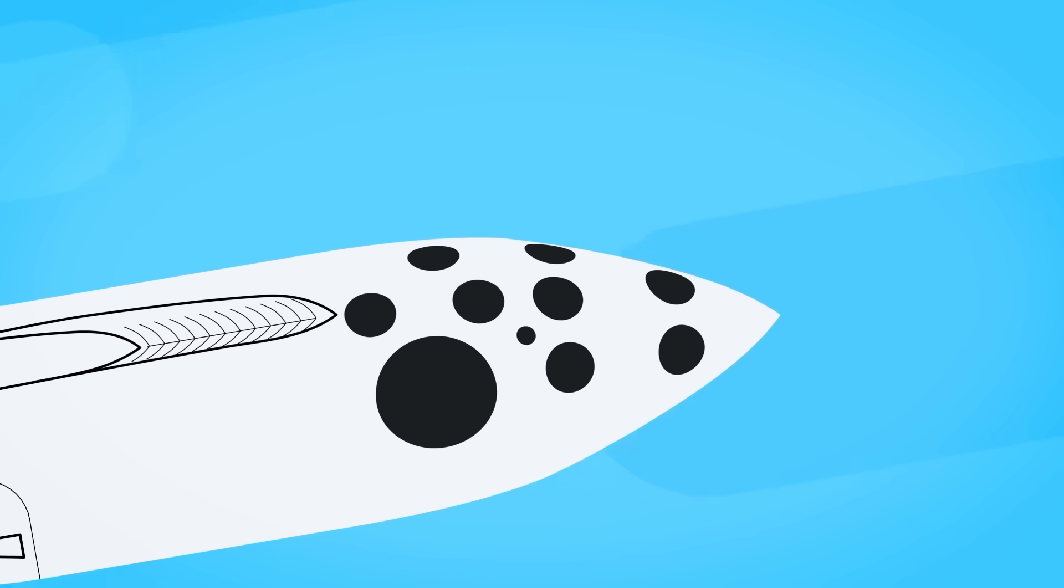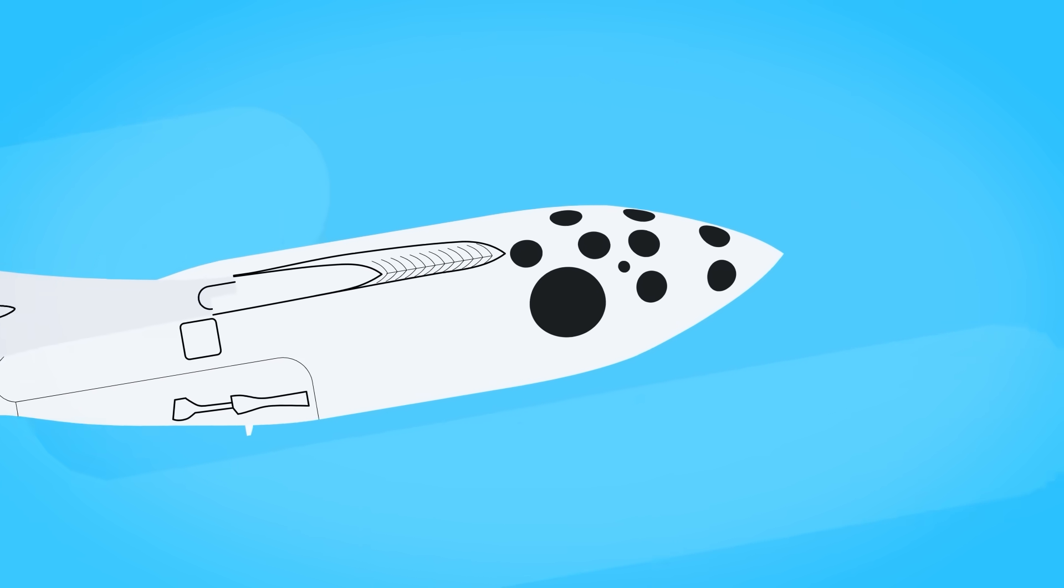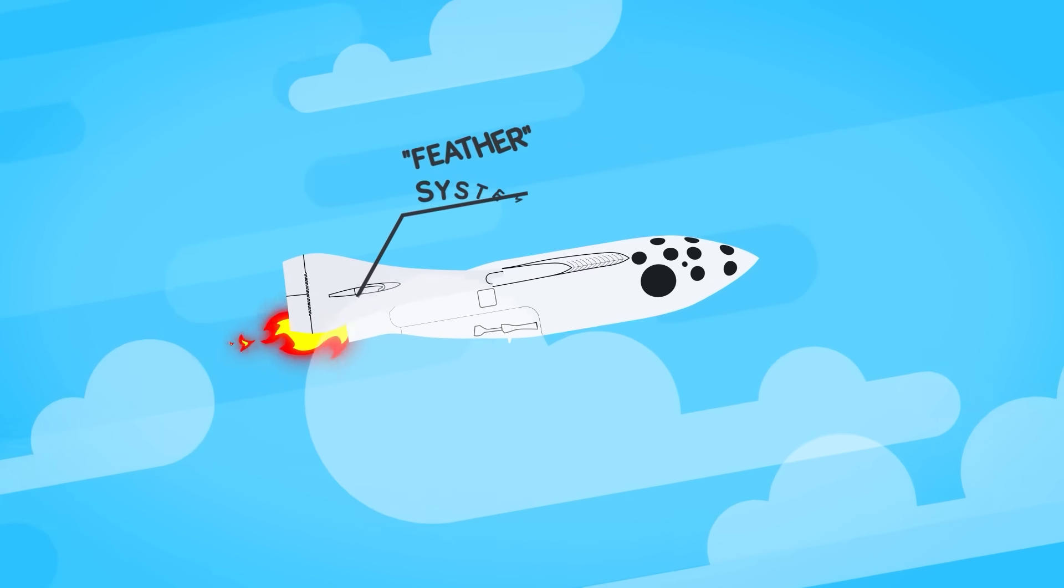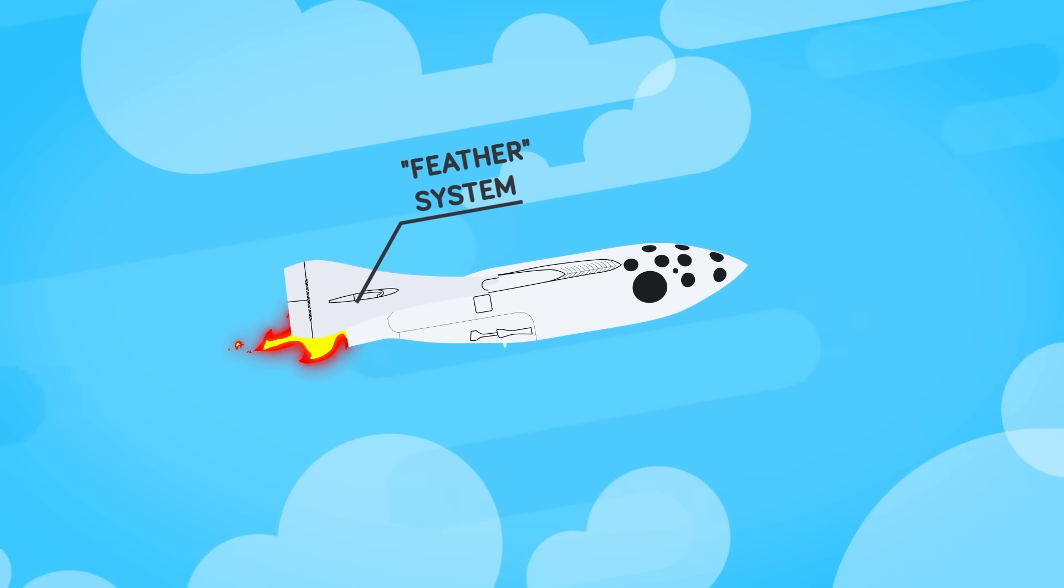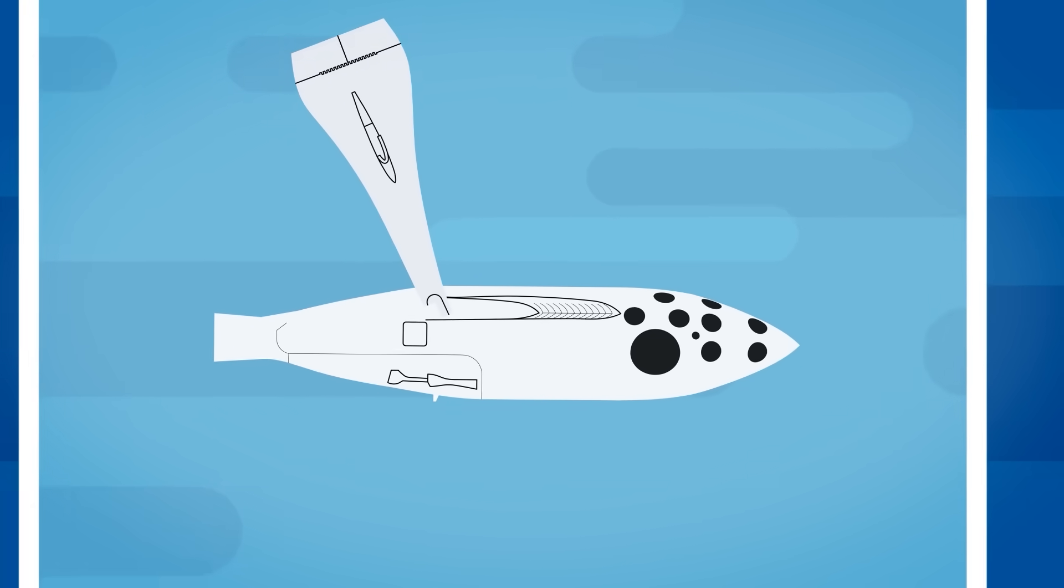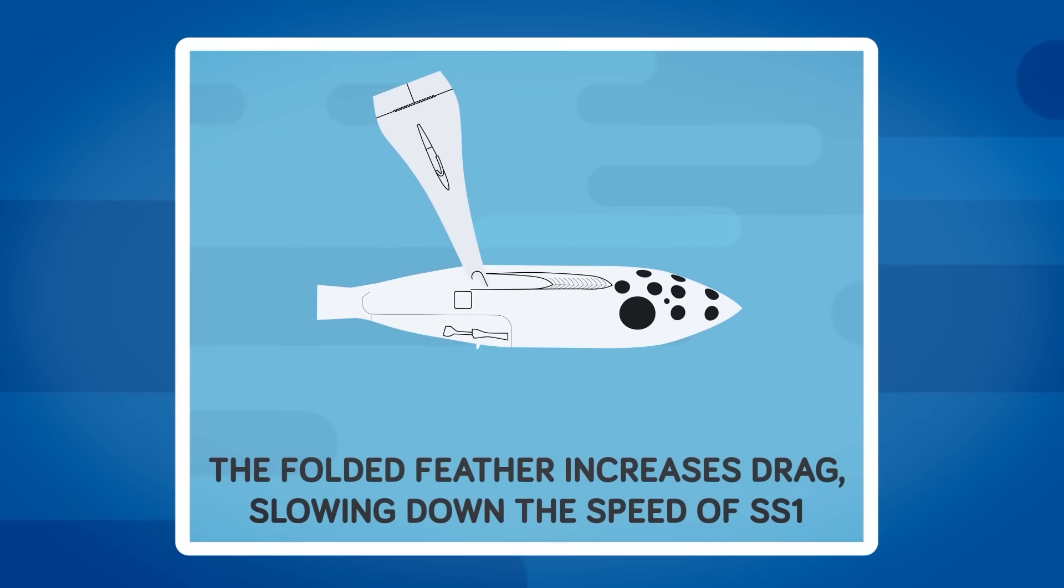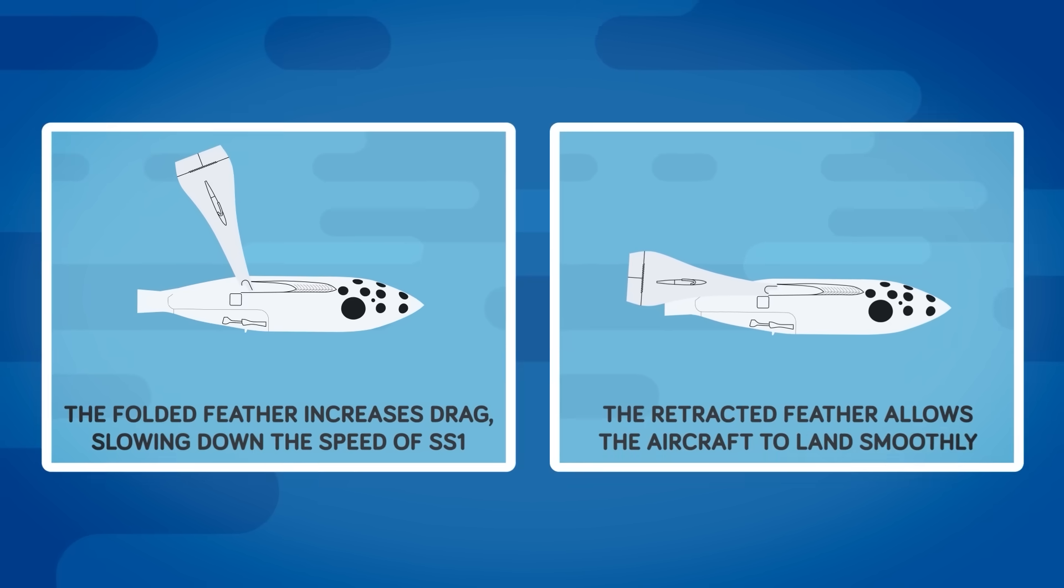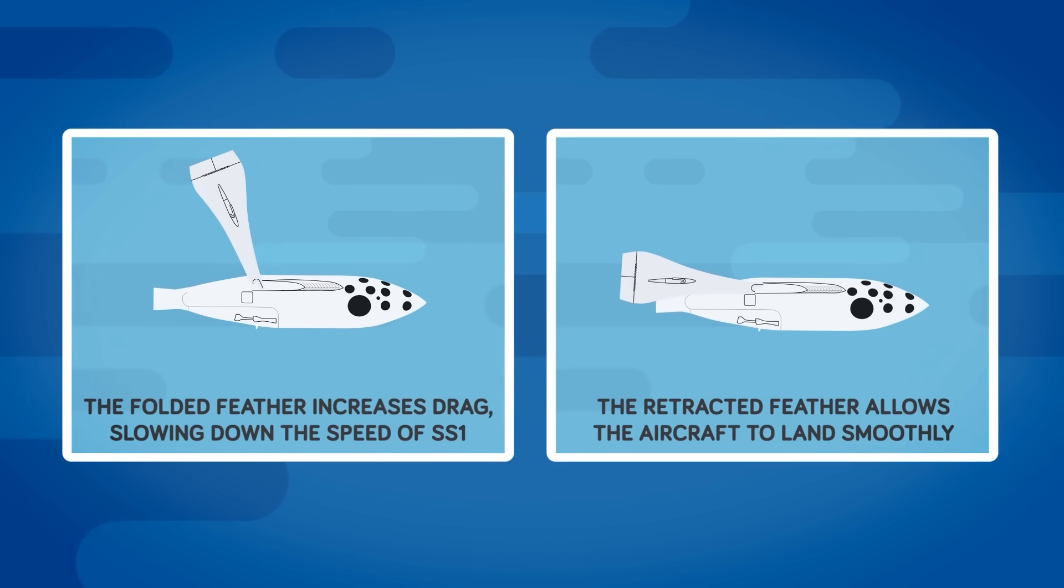At this point, the pilot lit the craft's hybrid rocket, sending SS-1 shooting up toward its goal. Another element of SS-1 that allowed it to successfully complete its journey was the feather system. The feather here refers to the rear portion of the SS-1's wings, which would fold vertically before the craft reached its highest point. This would increase drag, slowing SS-1's speed as it prepared to re-enter the atmosphere. Then the feather would be retracted, allowing the craft to glide to a smooth, safe landing.